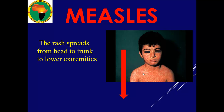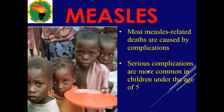Measles is followed by a maculopapular rash. The rash spreads from the head to the trunk, going down to the lower extremities — that is the direction. You can see the maculopapular spots all over; they are reddish, called erythematous, and they spread downwards.